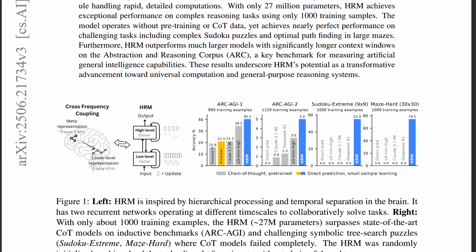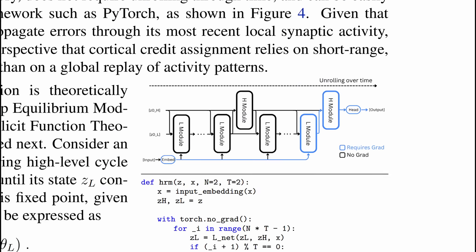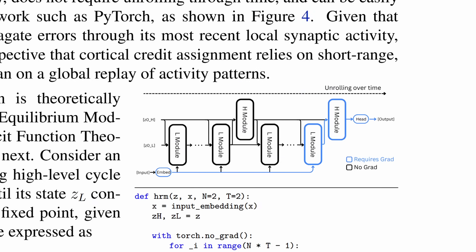Essentially, instead of transformers that predict the next word given a phrase, HRM will engage in quote-unquote thinking or reasoning by making bursts of fast thinking in the lower level module while also being guided by a higher level module that is slower and more abstract than the lower module to iterate its thinking properly.